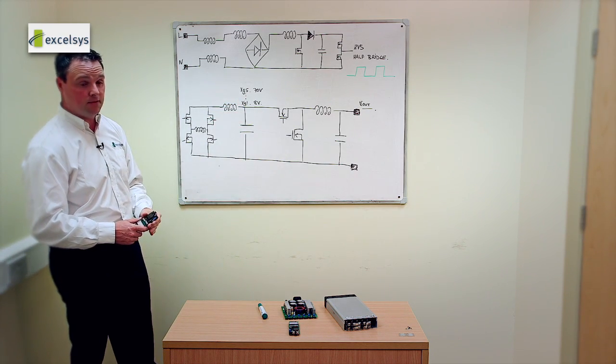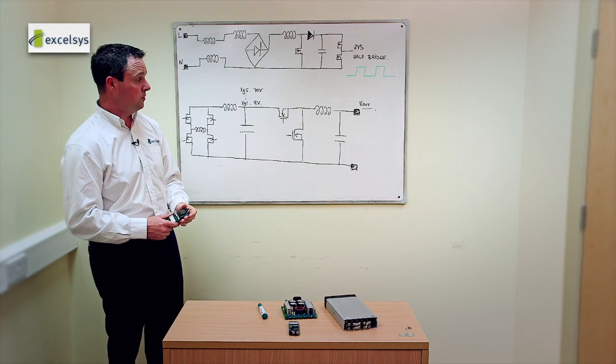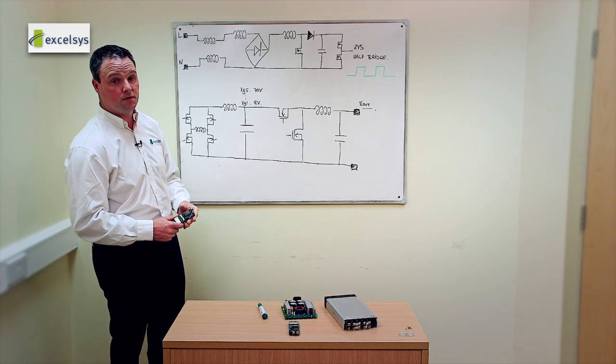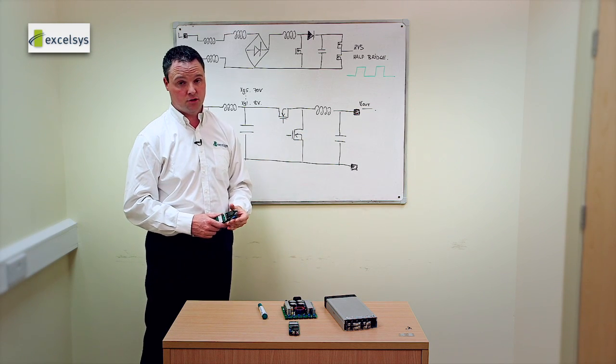And we then take that DC bus and we have a synchronous buck where we set the output voltage. This is how we can achieve the wide output range on each of the individual power mods. And each of these are an independently controlled loop.